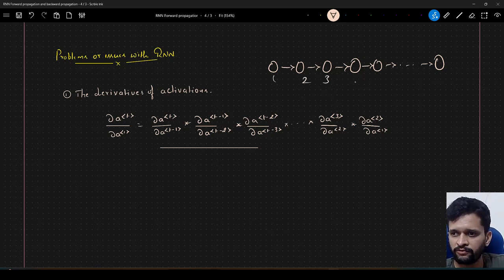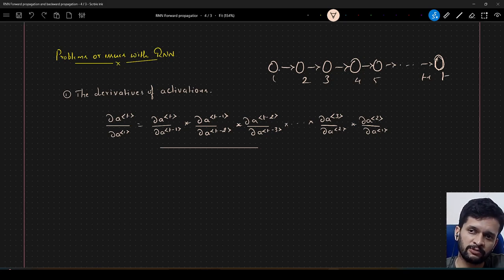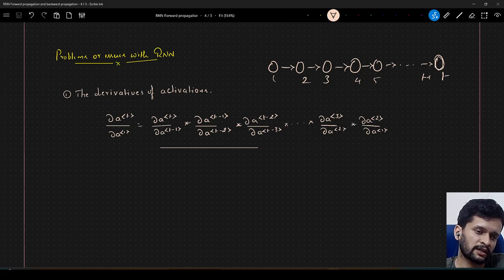So, 1, 2, 3, 4, 5, t minus 1 and t. So for activation at time step t, input is t minus 1 activation. For activation at t minus 1, input is t minus 2 activation. So like this, activation from first time step will somehow flow towards the end that is activation at time step t.